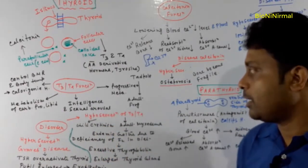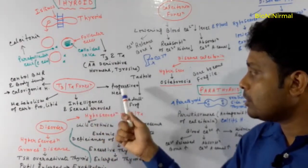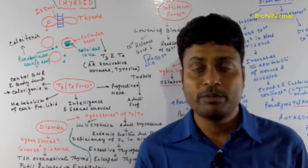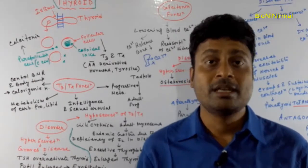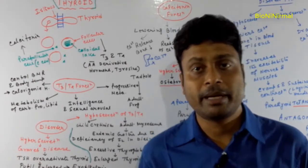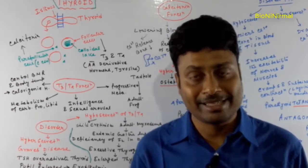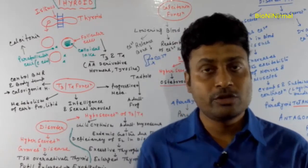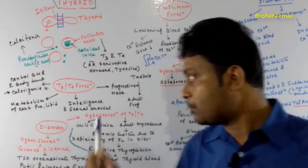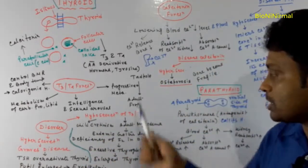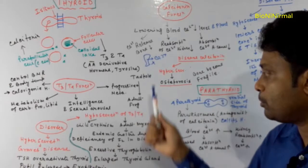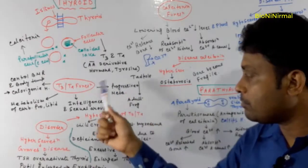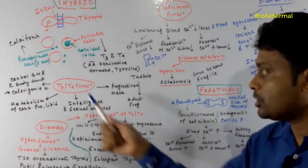Thyroxine also controls progressive metamorphosis. There are two types: one is retrogressive metamorphosis, seen in the case of the ascidian larva, and the other is progressive metamorphosis, which transforms the tadpole into the adult frog. These are the functions of the thyroxine, T3, and T4.